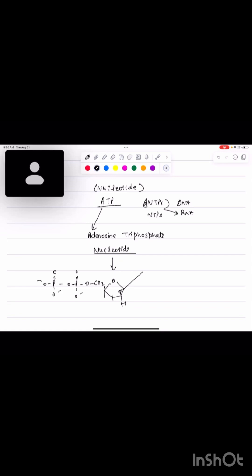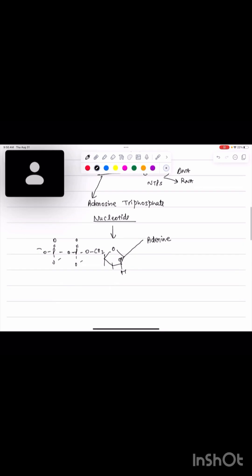If the name of the base is adenine, then this is adenosine triphosphate. Adenosine means adenine plus sugar. Since it has three phosphates, that's why we call it adenosine triphosphate.